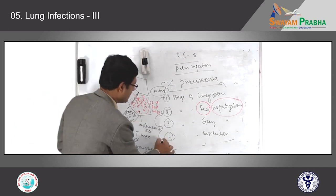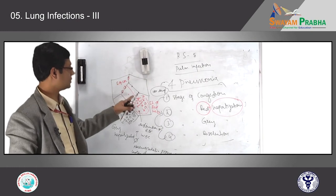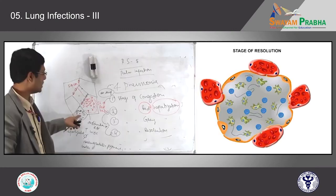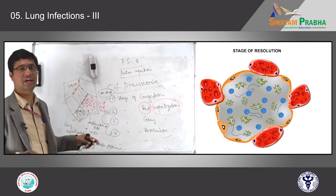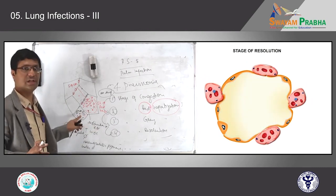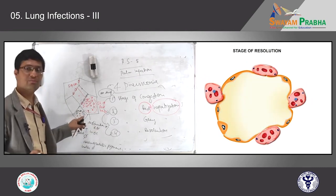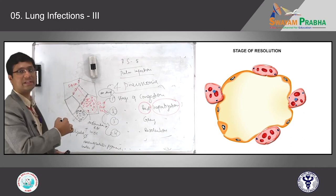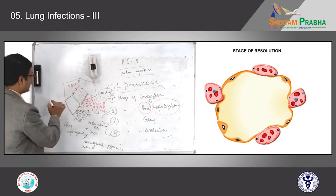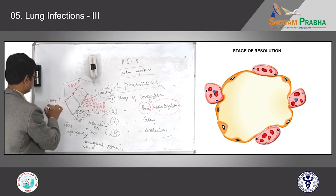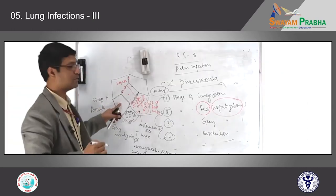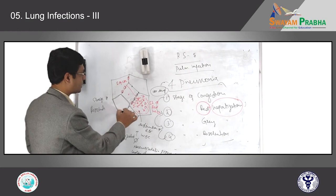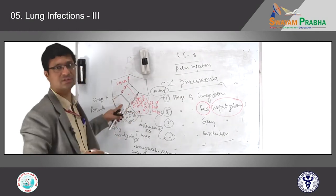The final stage is resolution. The infection going from one stage to another must ultimately resolve. The RBCs and WBCs will be gradually taken out, disintegrated, and cleared off by mononuclear cells and histiocytes — it becomes a process of healing. This we call the stage of resolution, where alveoli will become normal, all the inflammatory cells will go off and gradually be cleared off, and everything will be healed.